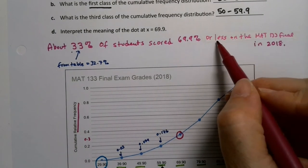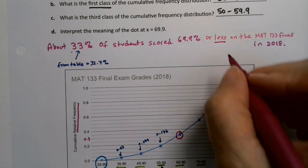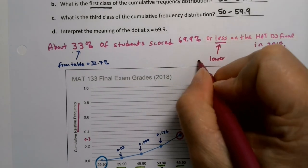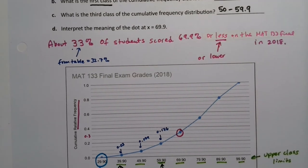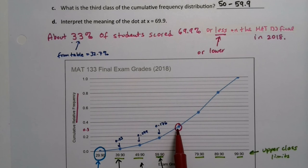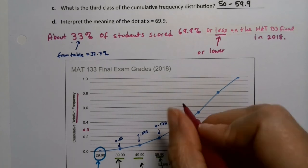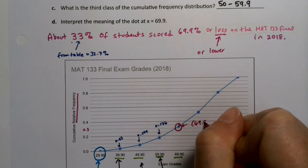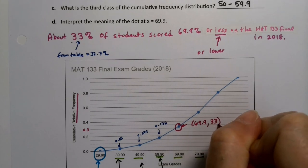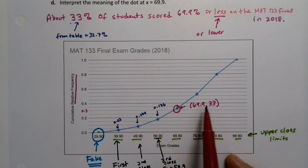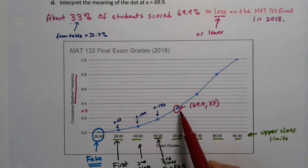So you could say less. You could say lower, whichever word makes you happy, right? So about 33% of students scored, right? And it's because this number right here, what you're doing is it's 69.9 comma 33, roughly. So you're saying, hey, 33% of students scored this number or below, right? Because you've accumulated up to that value.